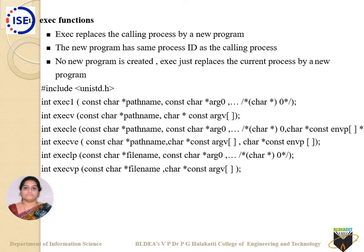In today's class we will go through six different types of exec functions or APIs. With respect to exec as an API, it is used to execute a respective program or file in the space allocated through the fork API. Let us go through these six different types of exec API.